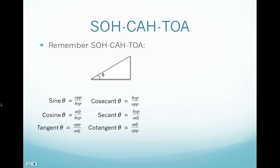Basically, with our new trig functions, these are just going to be reciprocals. Notice that cosecant goes with sine — sine did not have a 'co' in front of it, its reciprocal does. Whereas cosine has the 'co' in front of it, its reciprocal does not. So just remember that sine and cosecant are reciprocals of each other, cosine and secant are reciprocals of each other, and tangent and cotangent are reciprocals of each other.